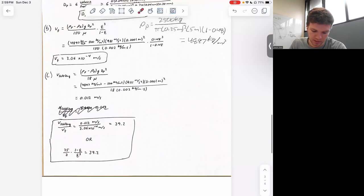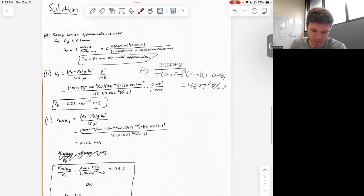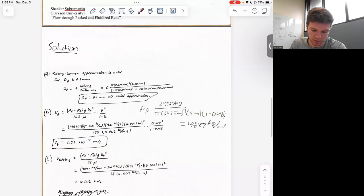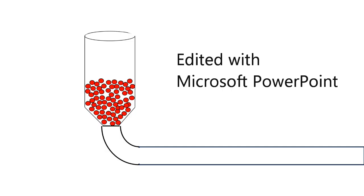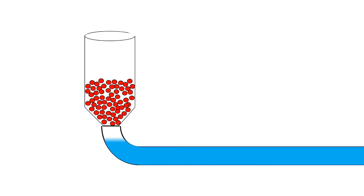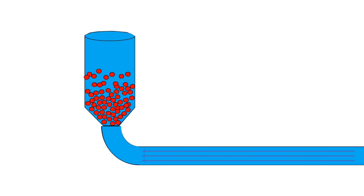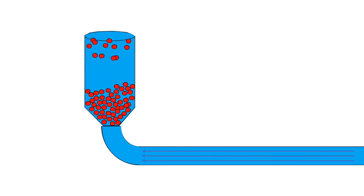That's the gist of fluidized beds. This short example demonstrates an increase in velocity and pressure drop through a packed bed until we see the onset of minimum fluidization. As fluid velocity increases, we see an expansion in the bed and void fraction until fluidization occurs. Thank you for watching.